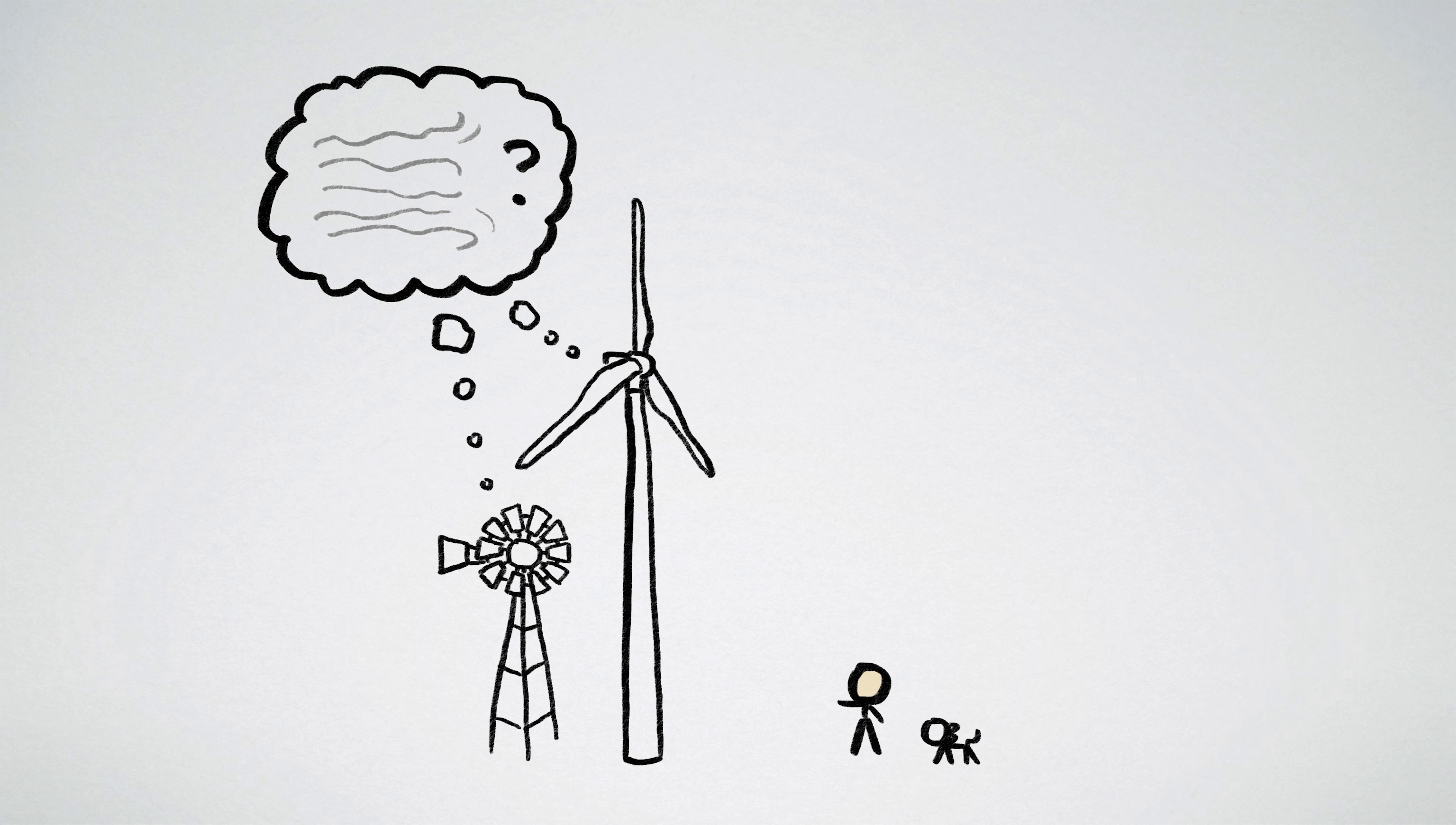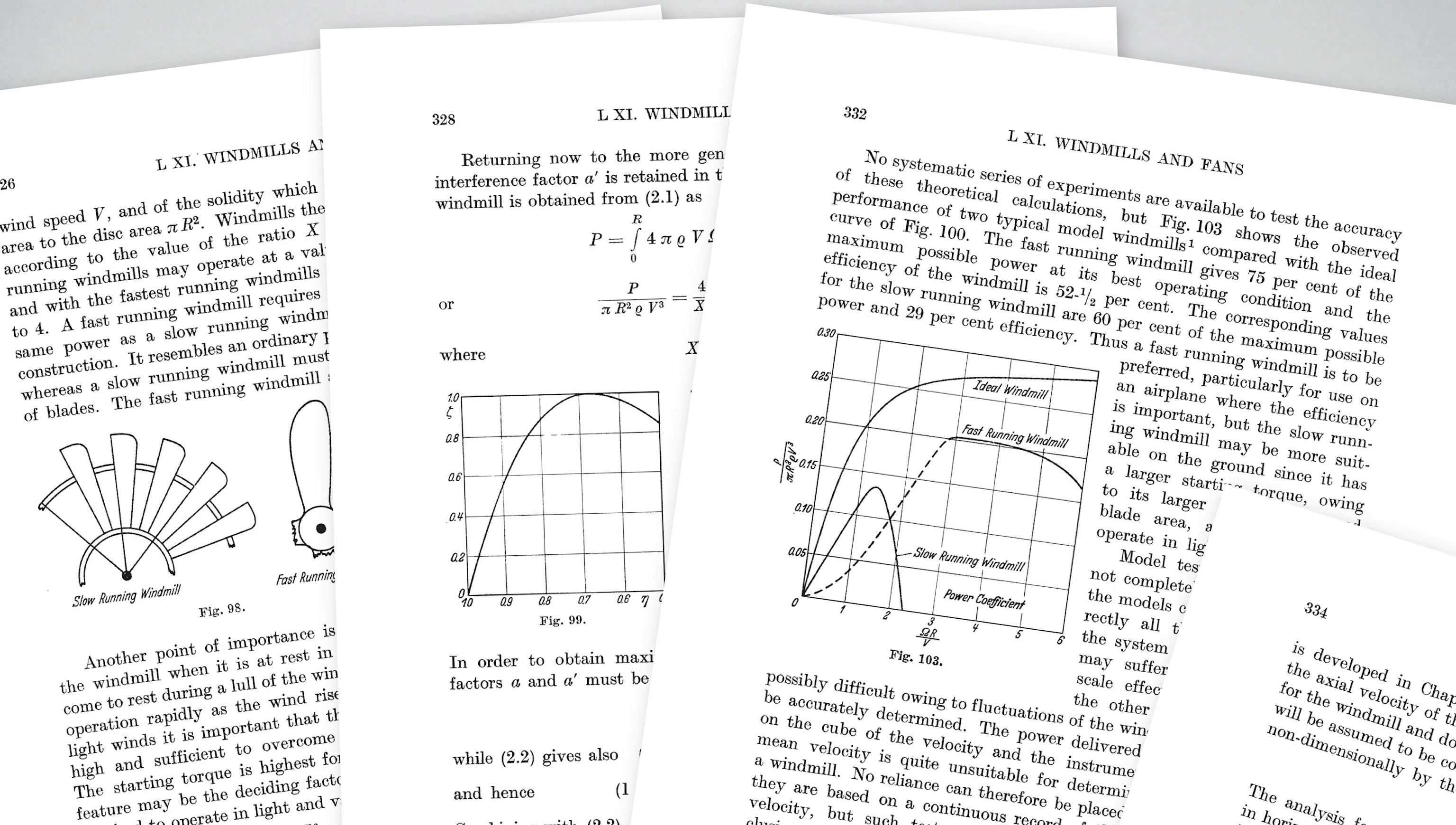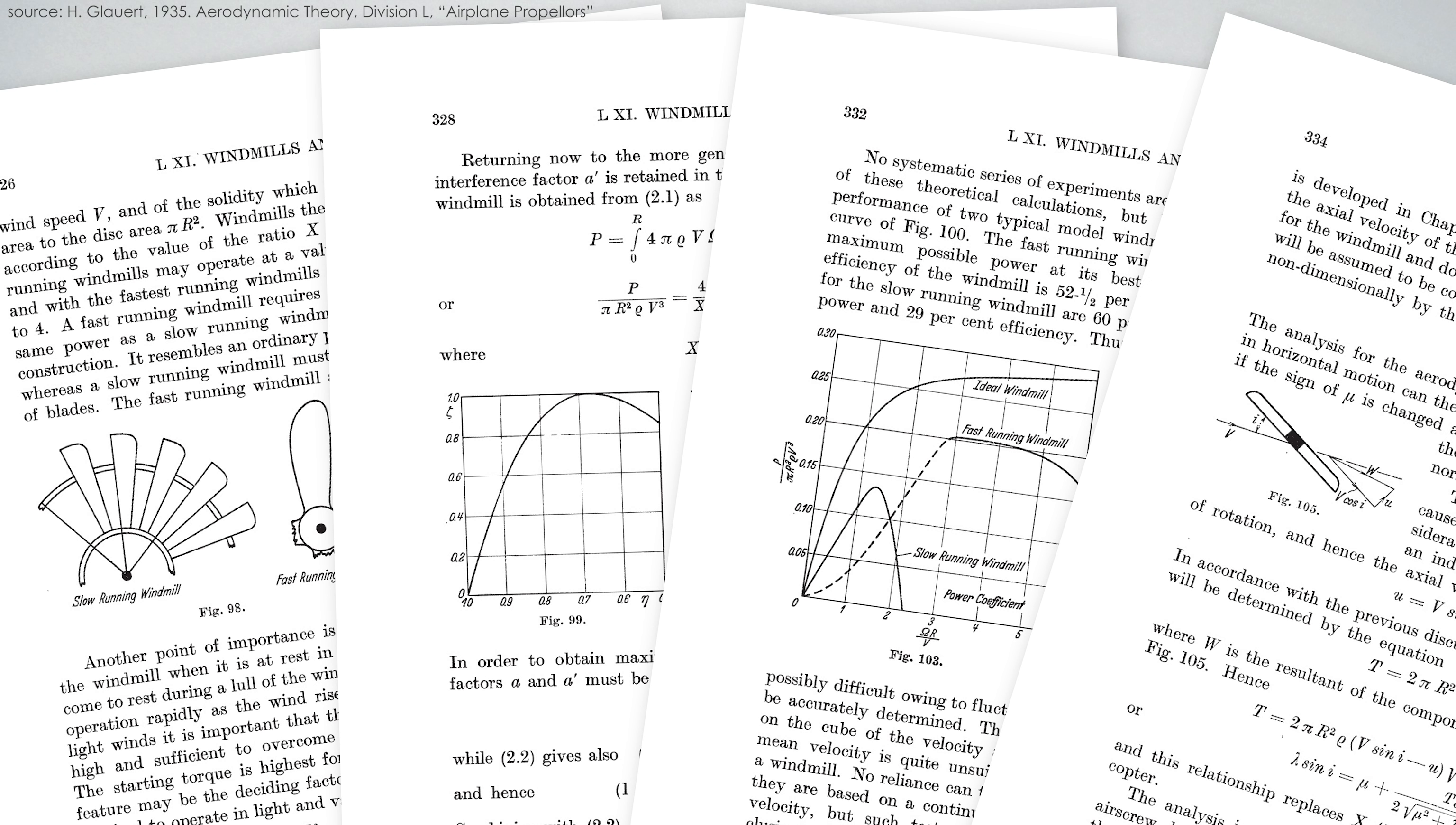So how much wind should a windmill mill? Two-thirds of it, for 59% efficiency in extracting the energy. Obviously, real-world windmills are far more complicated and have way more engineering considerations, so the 59% number may not apply exactly.